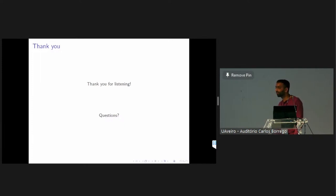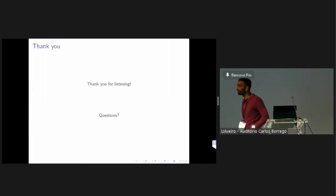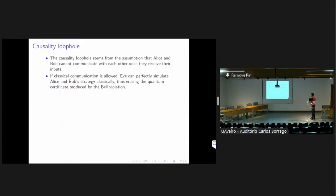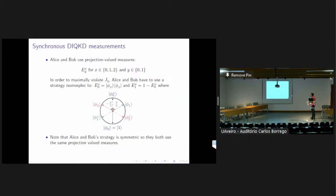Thank you very much for that great talk. For the rigidity result you show, can you say more about how you show that and how it relates to almost synchronous correlations? Basically, you can use two-projections theory or Jordan's lemma to show that Alice and Bob's strategy must be a qubit strategy, and then if you have a maximal violation, the state used must be the EPR pair. Is the Jordan's lemma technique specific to the two-input setting — could you generalize it to more outputs?